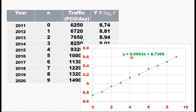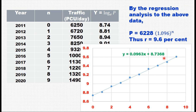The equation of this line is y = 0.0963n + 8.7368. Taking the anti-log, e^8.7368 gives P0 = 6228. The value of r is 0.096, so 1 + r = 1.096. The final equation becomes Pn = 6228 × (1.096)^n, where r = 9.6%. That is how traffic prediction is done based on past data.